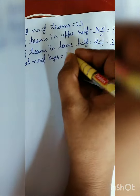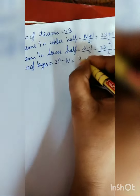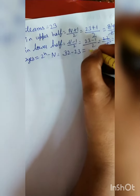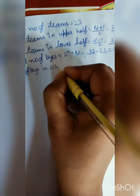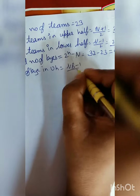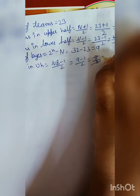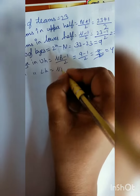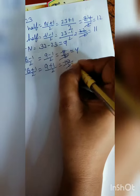Formula for total byes is 2 to the power n minus n. 2 to the power n is 32, minus n which is 23. Answer is 9. Number of byes in upper half: formula is number of byes minus 1 upon 2, so 9 minus 1 upon 2 is 8 upon 2, equal to 4. Number of byes in lower half is n plus 1 upon 2: 9 plus 1 upon 2 is 10 upon 2. Answer is 5.